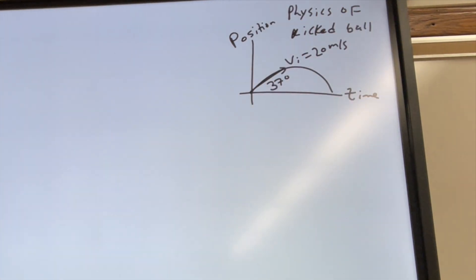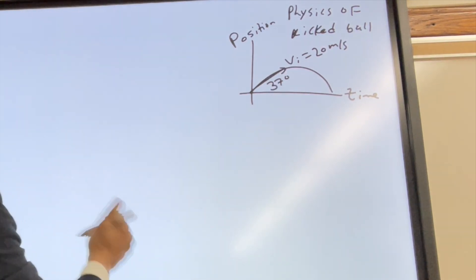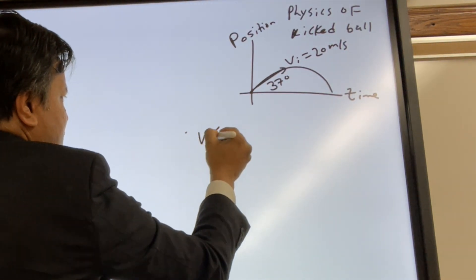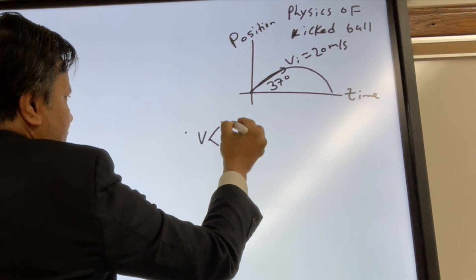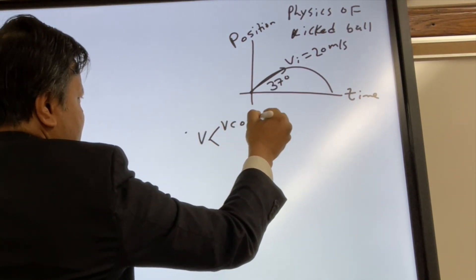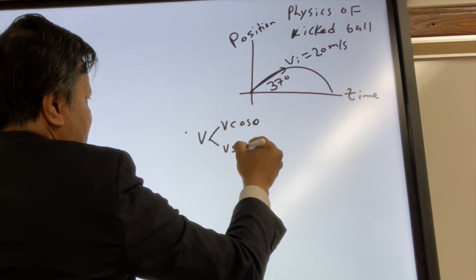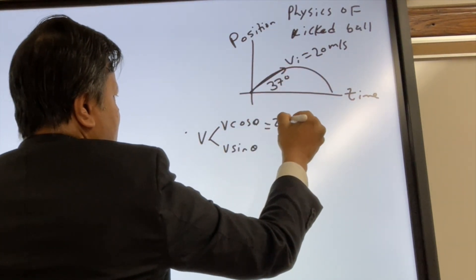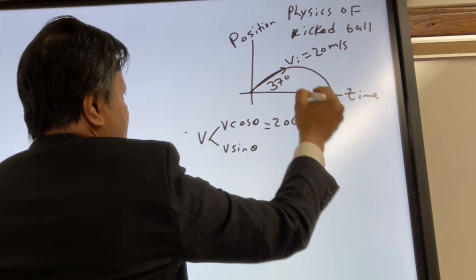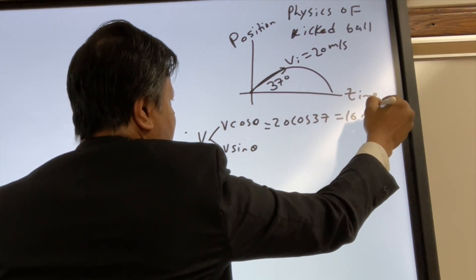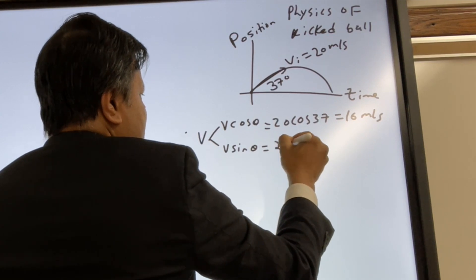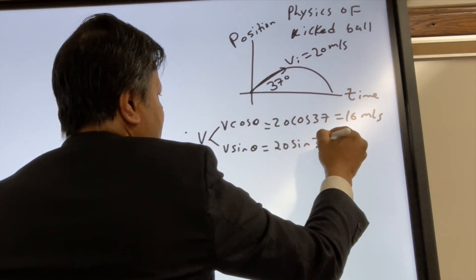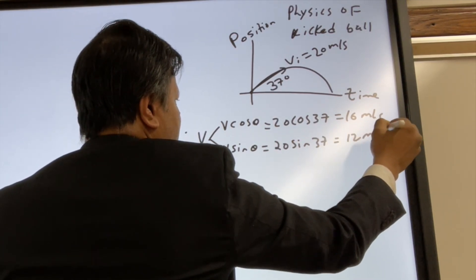The first thing we are going to find is both components of the velocity. Velocity would be V cosine theta and V sine theta. V cosine 37 would be 20 cosine 37, that would be 16 meters per second. And 20 sine 37 would be 12 meters per second.